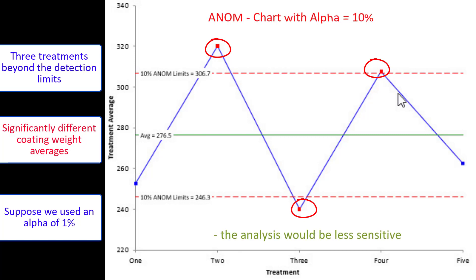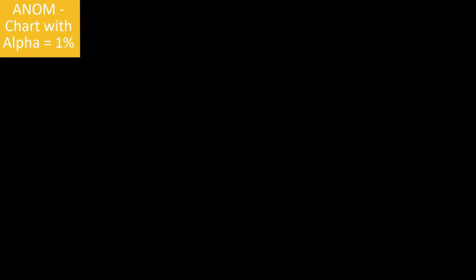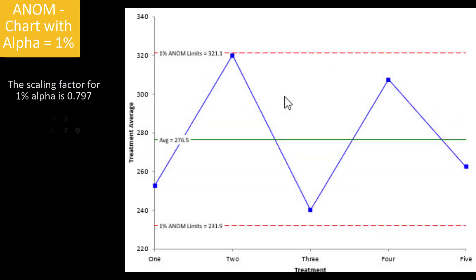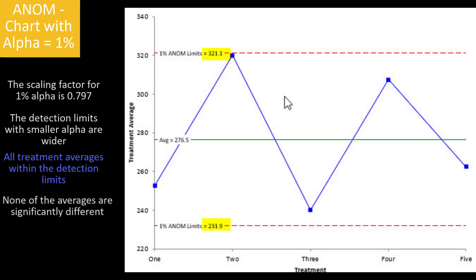Now let's suppose we reduce our scaling factor to 1 percent instead of 10 percent. Remember, we said it controls how sensitive the chart is. With a 1 percent alpha, the scaling factor is 0.797. And you get a little wider detection limits. And what do you get in this case? You get all of them within the detection limits. There's no difference in the treatment averages if you use an alpha of 1 percent instead of the 10 percent. So it's best to use an alpha of 10 percent because it's more sensitive to the signals. But you can get false ones.